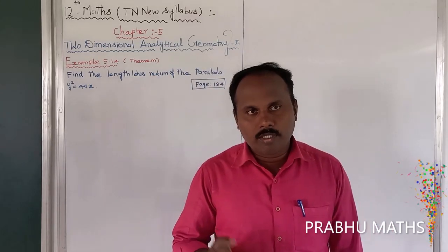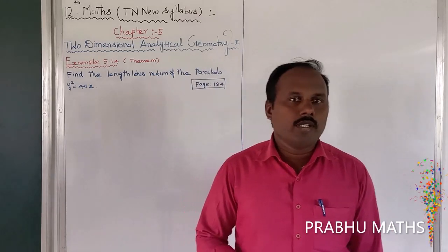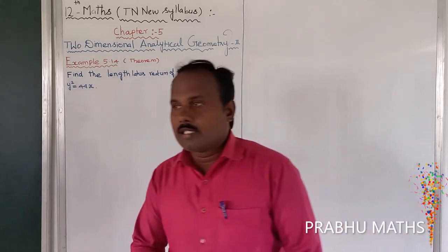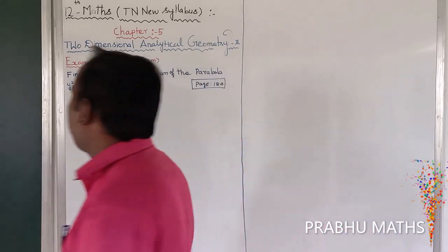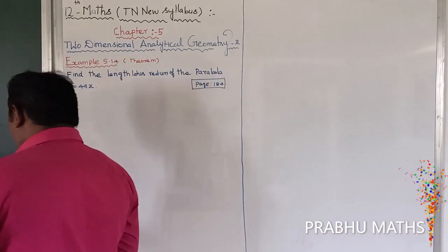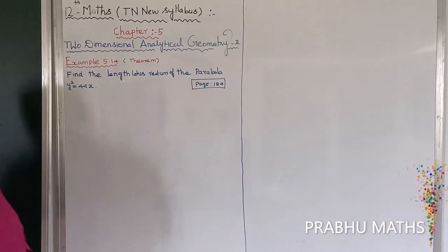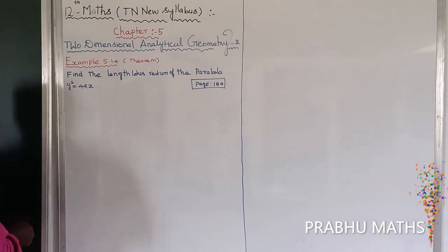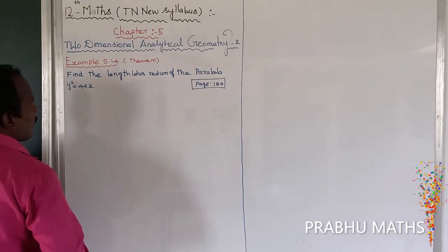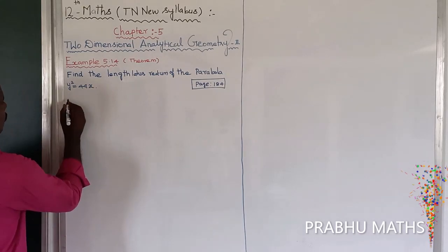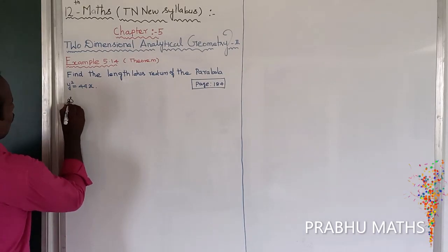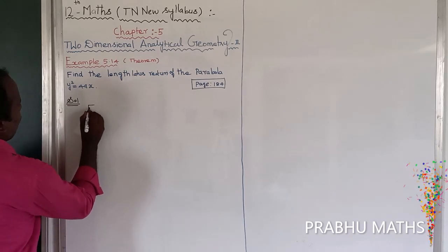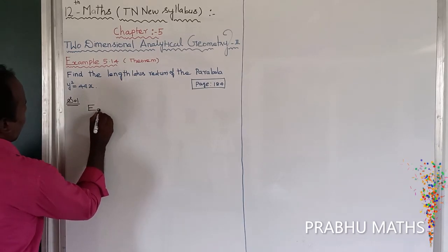First of all, let us draw the diagram of the parabola. The given equation is the solution. The equation of the parabola is y² = 4ax.